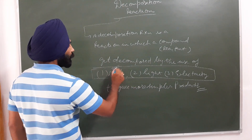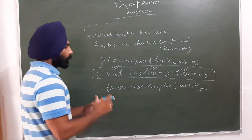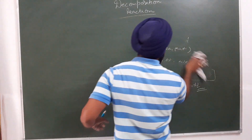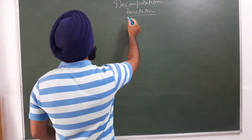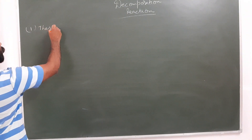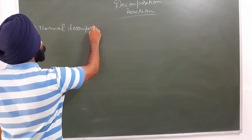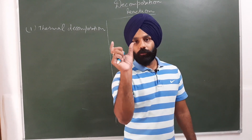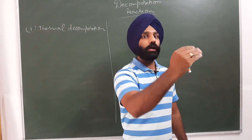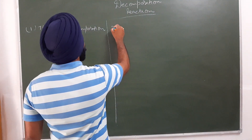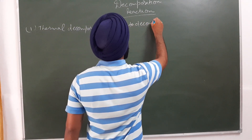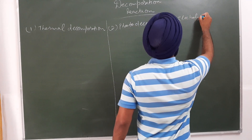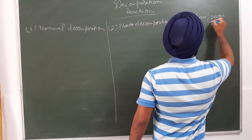According to the agent used to decompose the compound — heat, light, or electricity — decomposition reactions are of three types: number one, thermal decomposition; number two, photo decomposition; and number three, electrolysis, that is decomposition by the use of electricity.